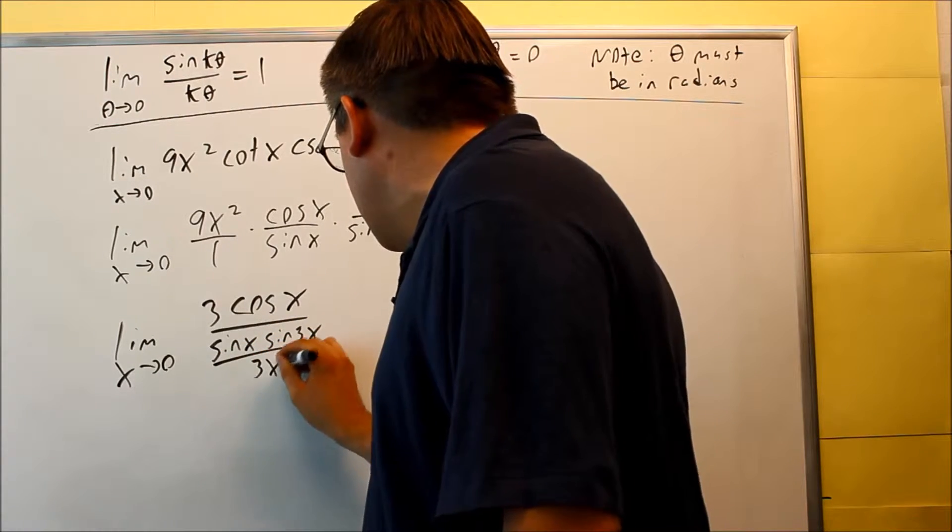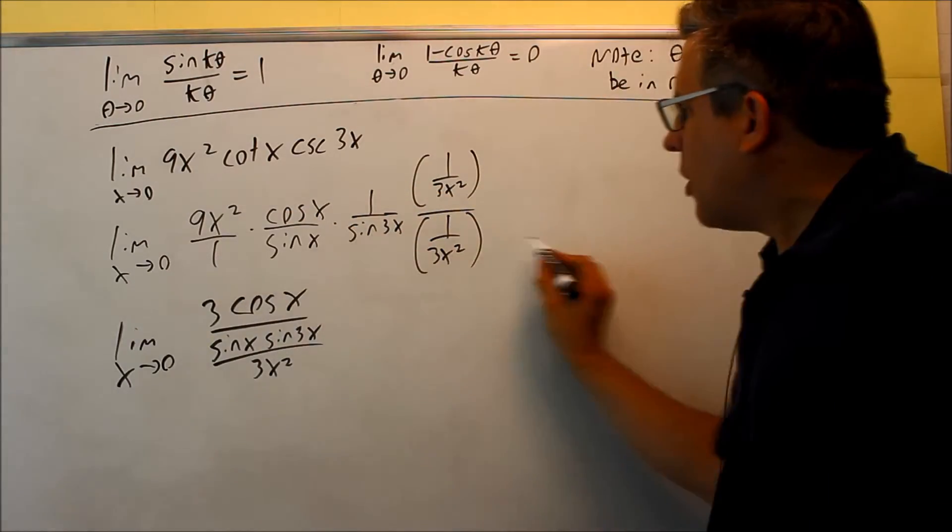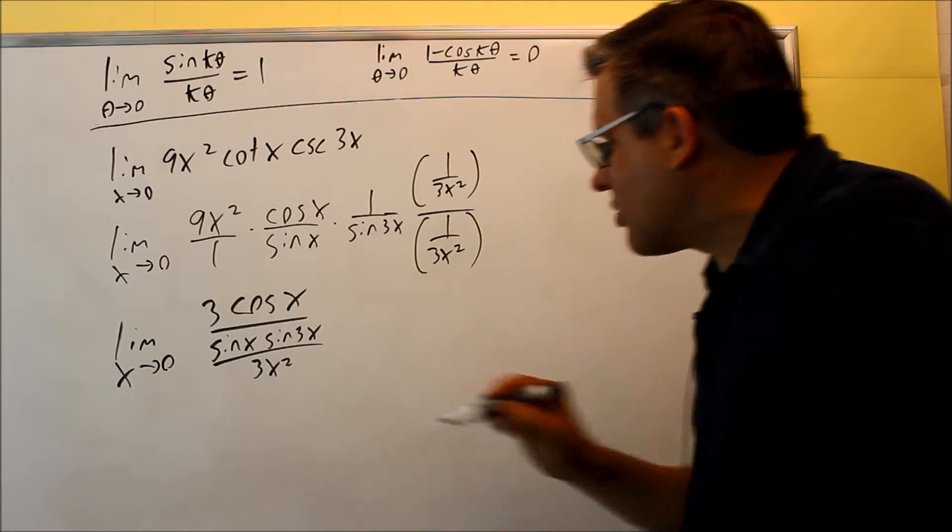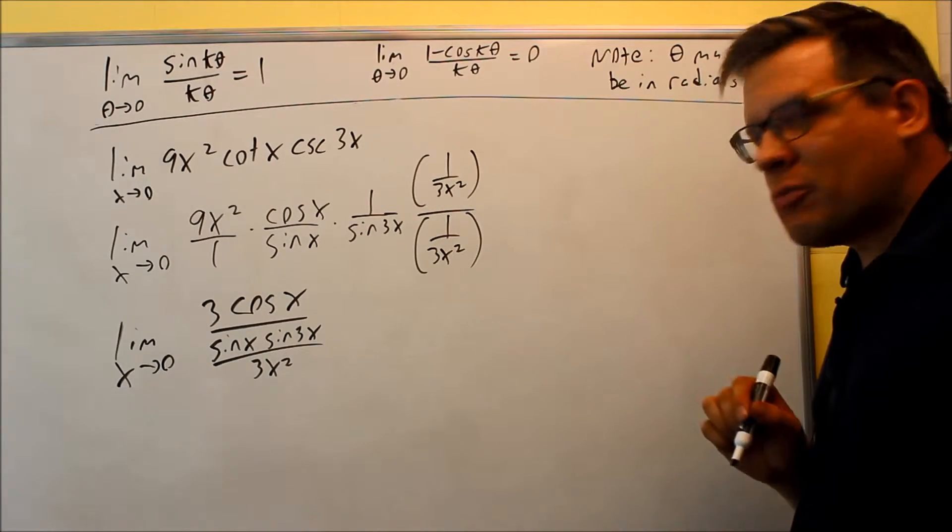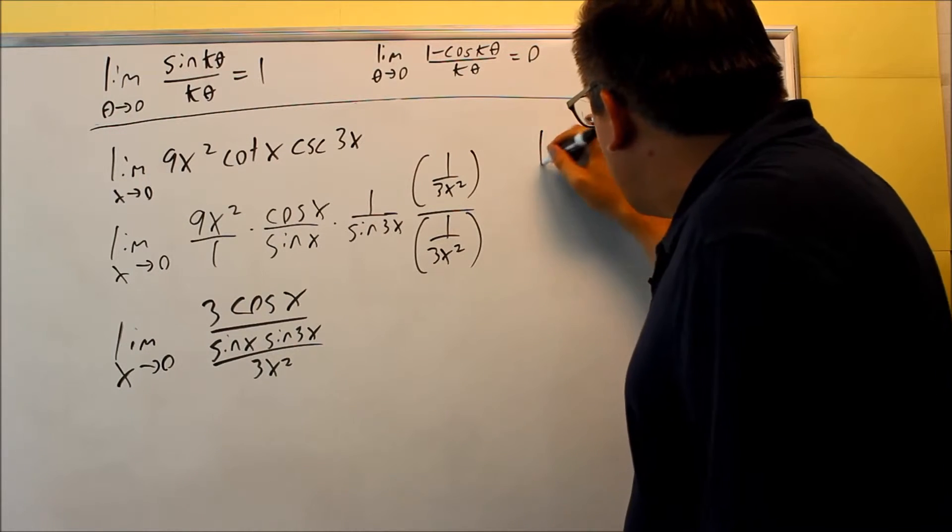On the bottom I'm going to end up with sin x times sin 3x. And all that's going to be over 3x squared. So I multiply across the top, multiply across the bottom. All four of these things you're going to get this is what it'll look like. As I mentioned before you want to be able to split these up.